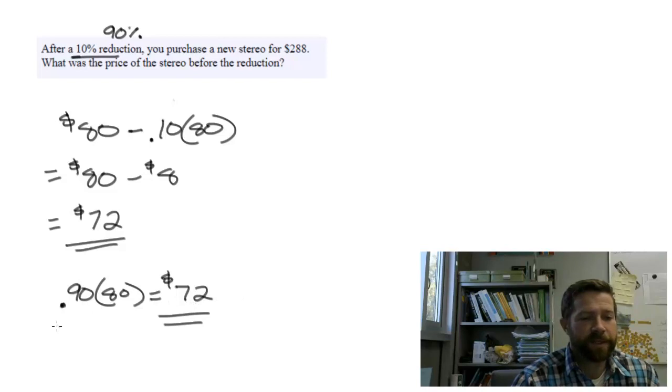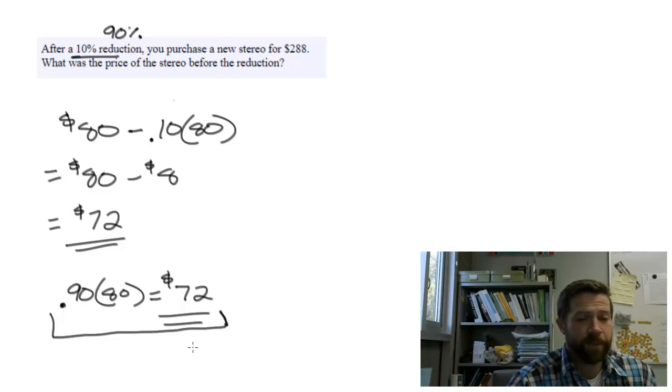Now check out this equation. We're going to replicate this equation with the information we have. In the situation we have, after a 10% reduction, you purchased a stereo for $288. So $288 is 90% of the original price.